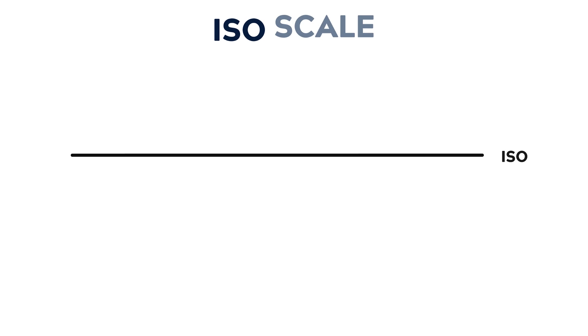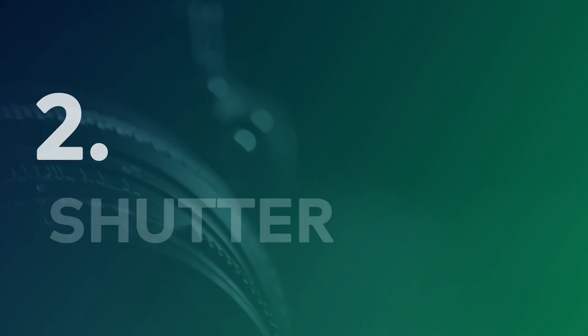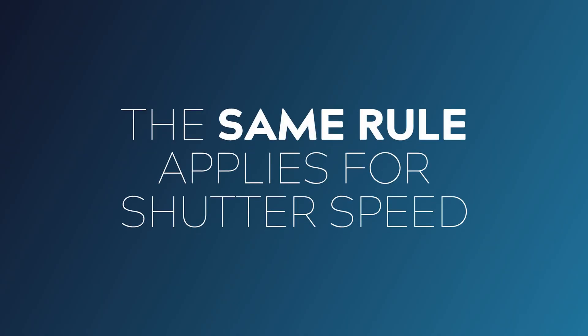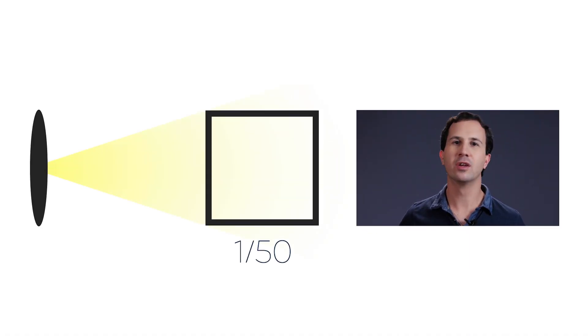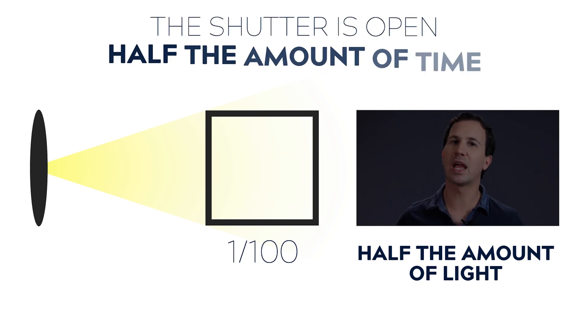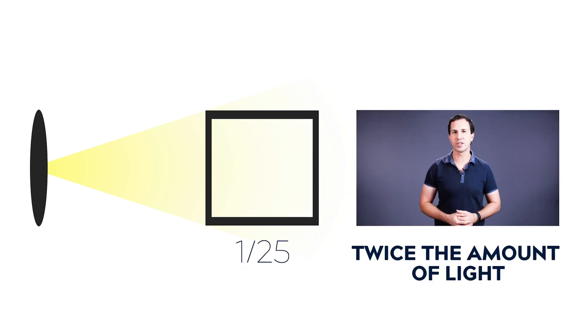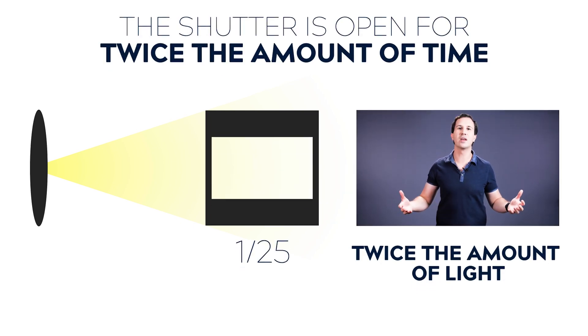It might be worth committing this one third scale to memory because you can't work these values out mathematically — they don't always divide evenly by three. Now let's look at shutter speed. The same rule applies: every time you double or half your shutter speed, you get a one stop increase or decrease. So if we change our shutter from 1/50th of a second to 1/100th of a second, we're opening the shutter for half the amount of time, and therefore that is a one stop decrease. If we go from 1/50th to 1/25th of a second, we're opening the shutter for twice as long and therefore getting a one stop increase. Most cameras will allow you to adjust your shutter in either one half stop or one third stop increments.